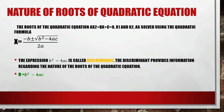The roots of the quadratic equation ax² + bx + c = 0 are x₁ and x₂, solved using the quadratic formula: x = (−b ± √(b² − 4ac)) / 2a. From that formula, the expression b² − 4ac is called the discriminant. The discriminant provides information regarding the nature of the roots of the quadratic equation — meaning we can determine the nature of the roots using b² − 4ac.